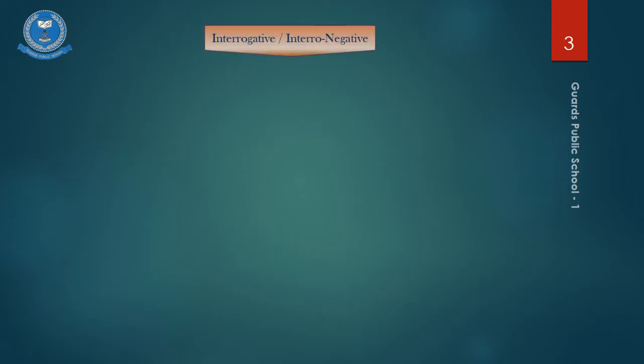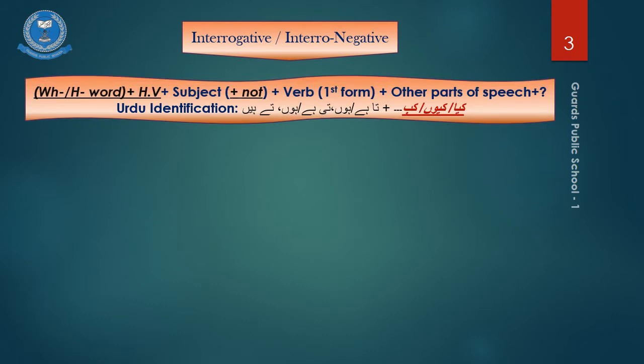Previously, we also learnt these sentence constructions for interrogative or intronegative forms. But sometimes, in an interrogative or intronegative sentence, it also has a WH or H word such as what, why, how, etc. So we have them in the beginning, then a helping verb, a subject, the word of negation not for the intronegative form, then the verb in its first form and other parts of speech and also a question mark at the end.